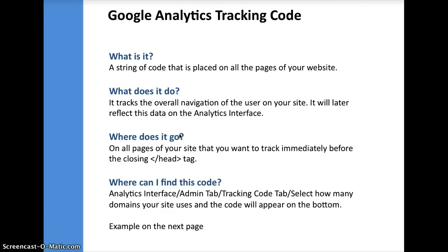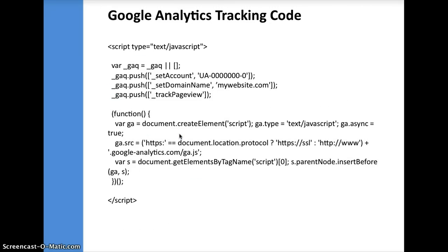It's a really good idea to make sure you have it on your home page and all other pages a user has access to. Where it goes is right immediately before the closing head tag. Where you can find this code is in the Analytics interface — go into the Admin tab, then select the Tracking Code tab, then select how many domains your site uses, and the code will appear at the bottom. With e-commerce, if your business uses an e-commerce program, sometimes when you add something to your cart the domain changes — for example, to secure.shoes.com. In that case, you definitely want to select two domains or more and have the right code placed around your site.